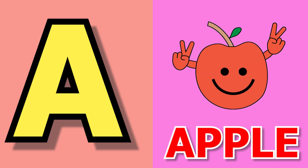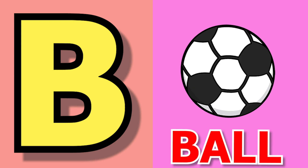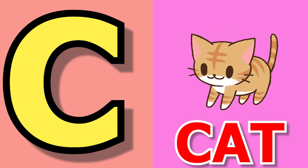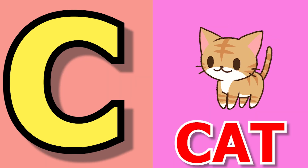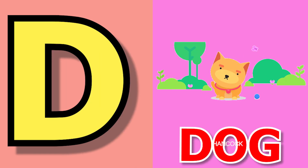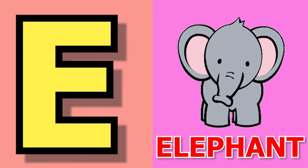A for apple, apple means save. B for ball, ball means gain. C for cat, cat means billy. D for dog, dog means kutta.